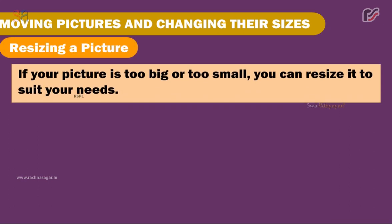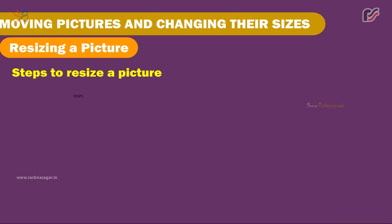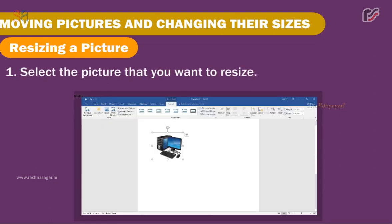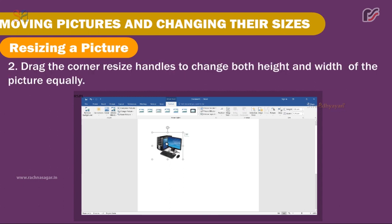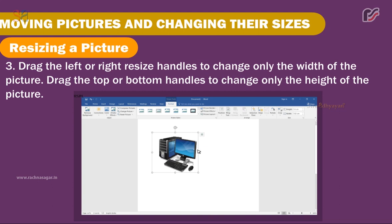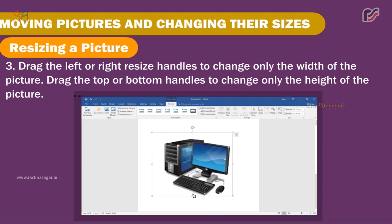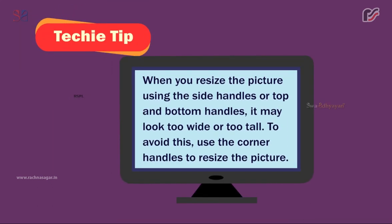Resizing a Picture. If your picture is too big or too small, you can resize it to suit your needs. Steps to resize a picture: 1. Select the picture you want to resize. 2. Drag the corner resize handles to change both height and width equally. 3. Drag the left or right resize handles to change only the width. 4. Drag the top or bottom handles to change only the height. Techie Tip: When resizing using side or top/bottom handles, the picture may look too wide or too tall — use the corner handles to avoid this.